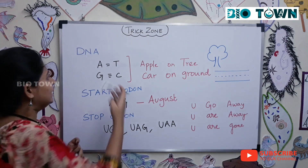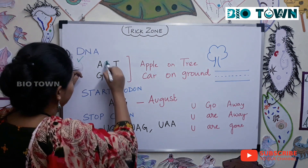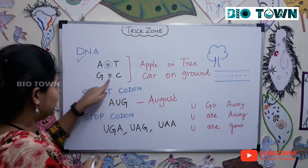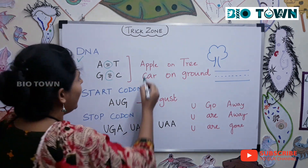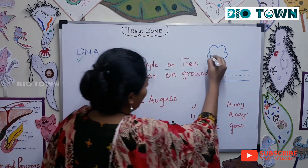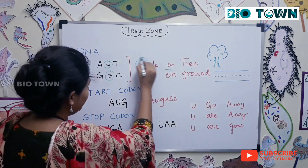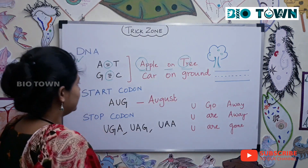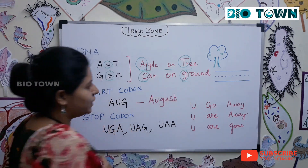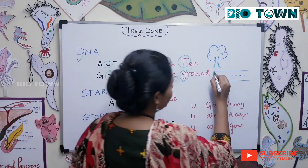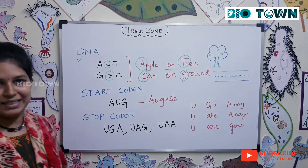In DNA, A always pairs with T by a double bond, and G always pairs with C by a triple bond. To remember this: apple on tree — A pairs with T, double bond. Car on ground — C always pairs with G. Imagine a road with three partitions. So it's very easy to remember.